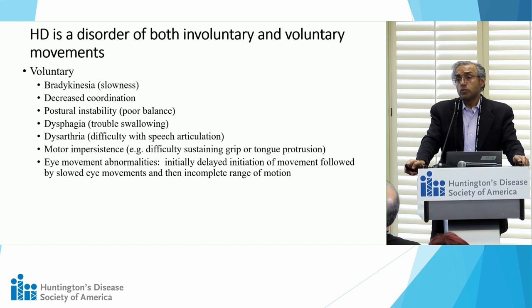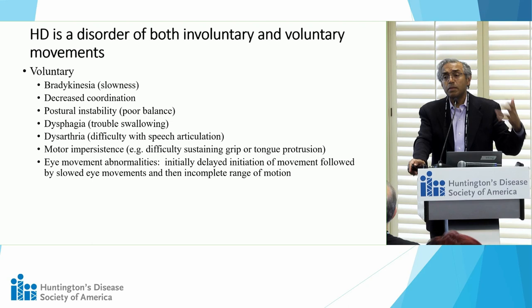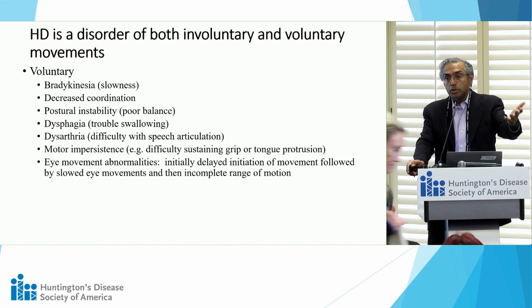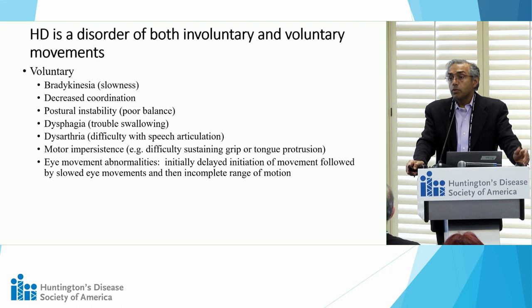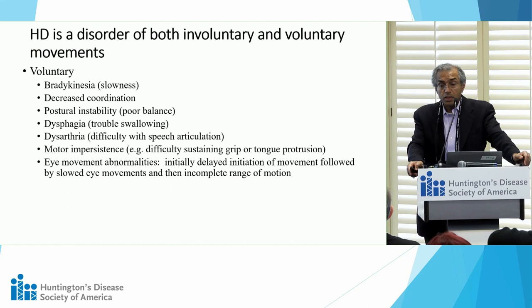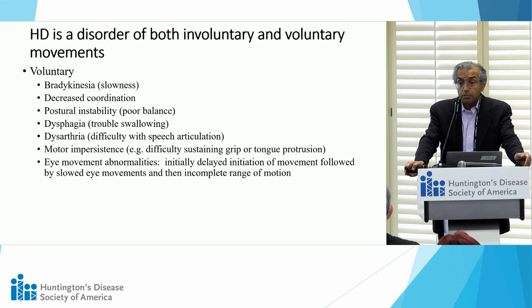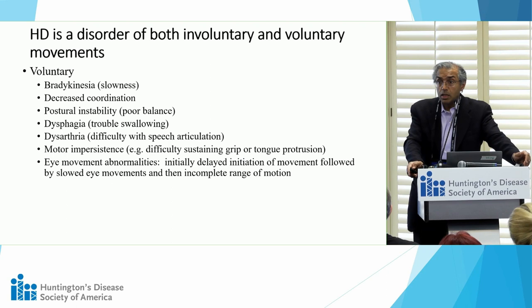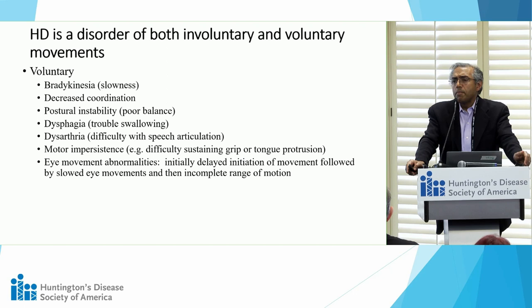Among the disorders of voluntary movement is Parkinsonism — not Parkinson's disease, but elements such as slowness of movement or bradykinesia, and rigidity. Tremor is relatively uncommon but can occur. Decreased coordination or ataxia is well recognized and contributes to gait problems. Poor balance and falls can be a major problem as the disease progresses. Speech and swallowing problems can be very troublesome, contributing to communication difficulties and weight loss. Motor impersistence is a phenomenon whereby patients have difficulty sustaining an action — classically called the 'milkmaid's grip.'